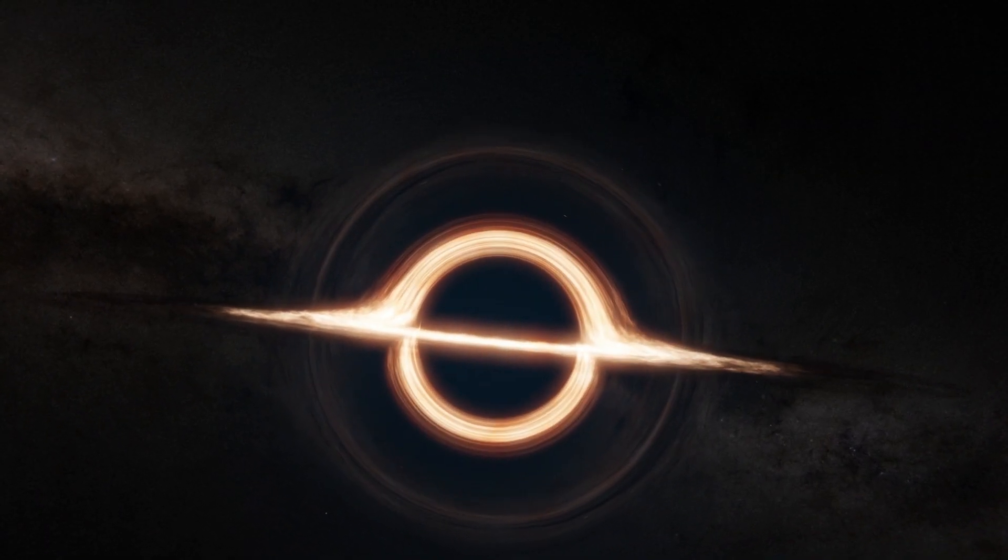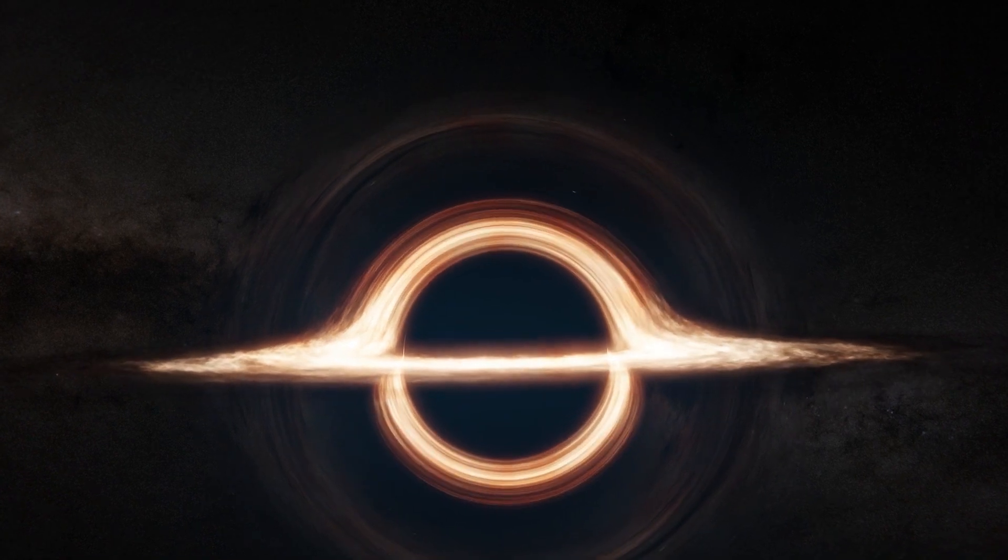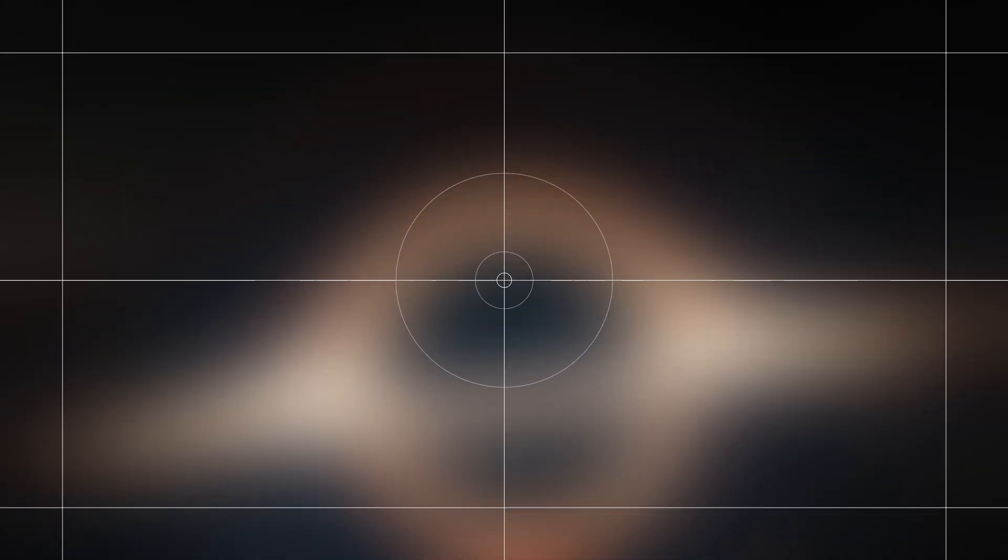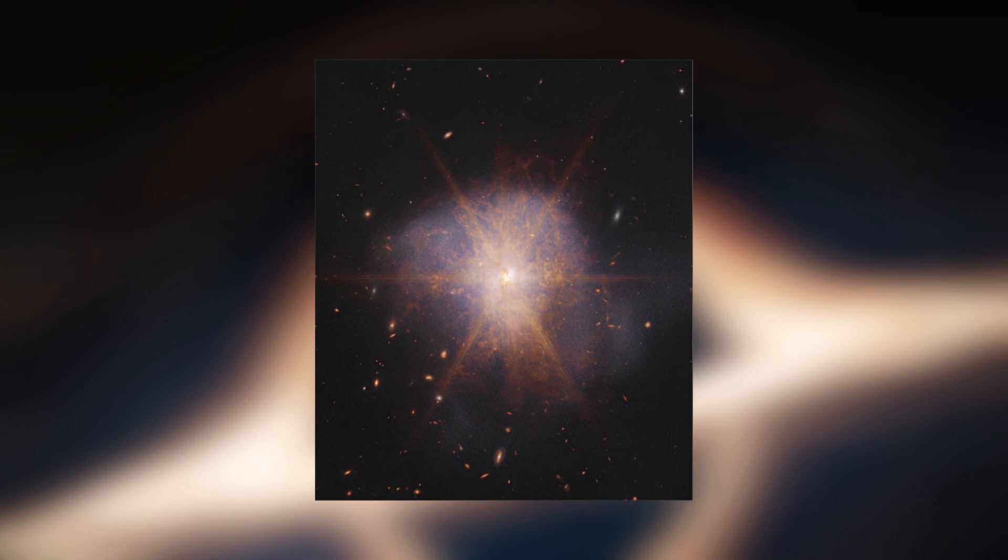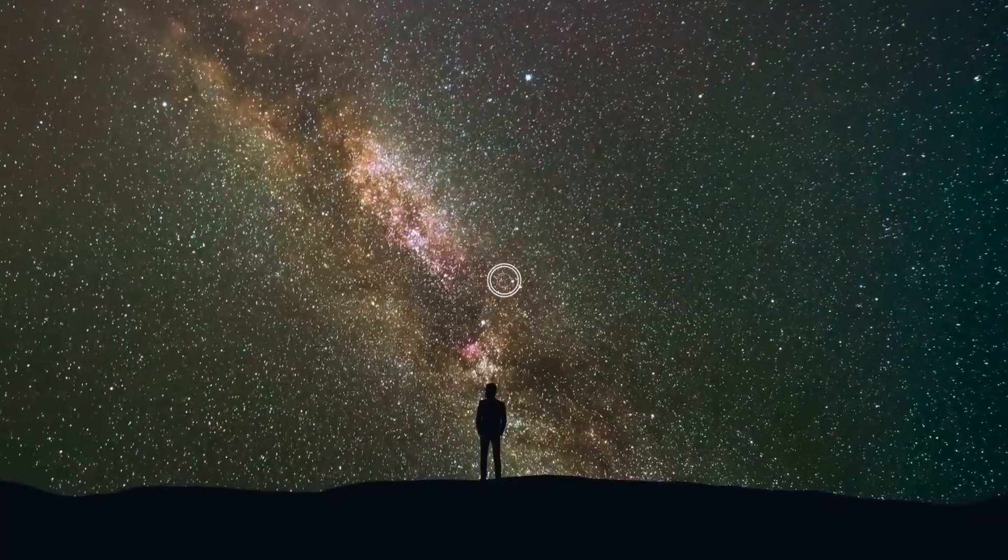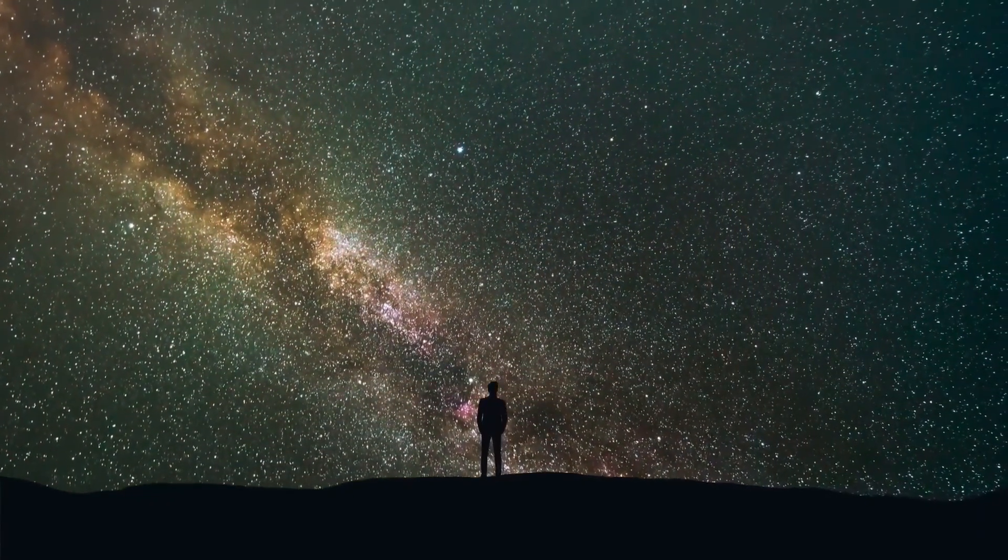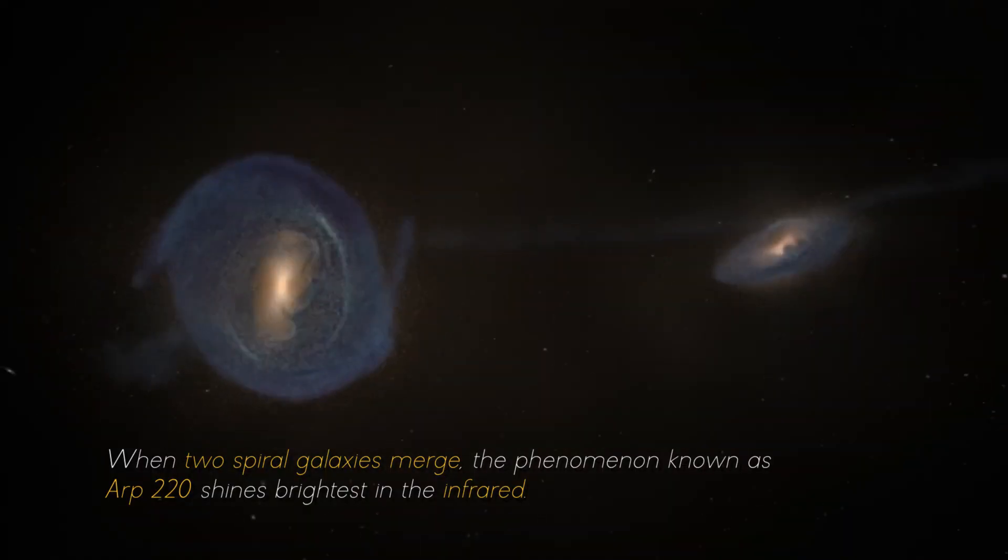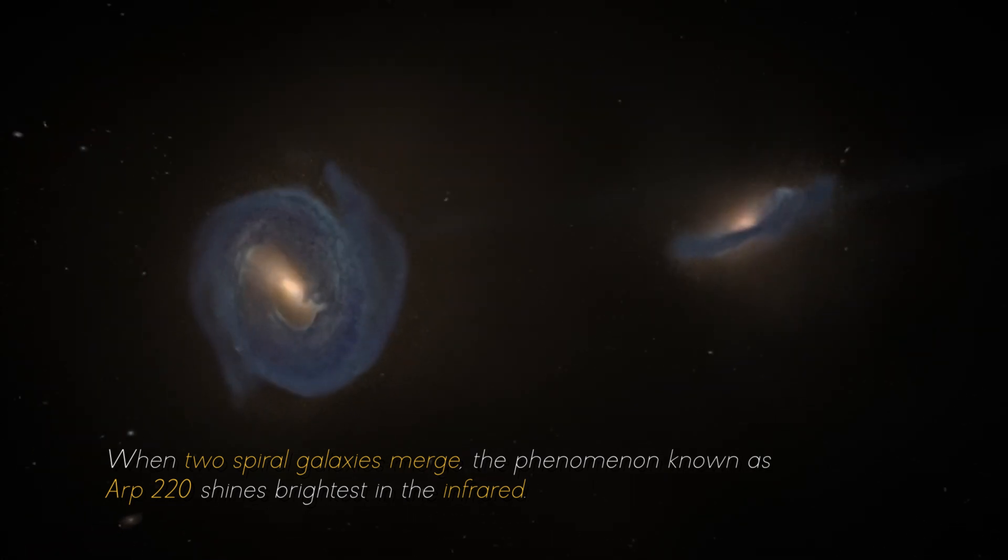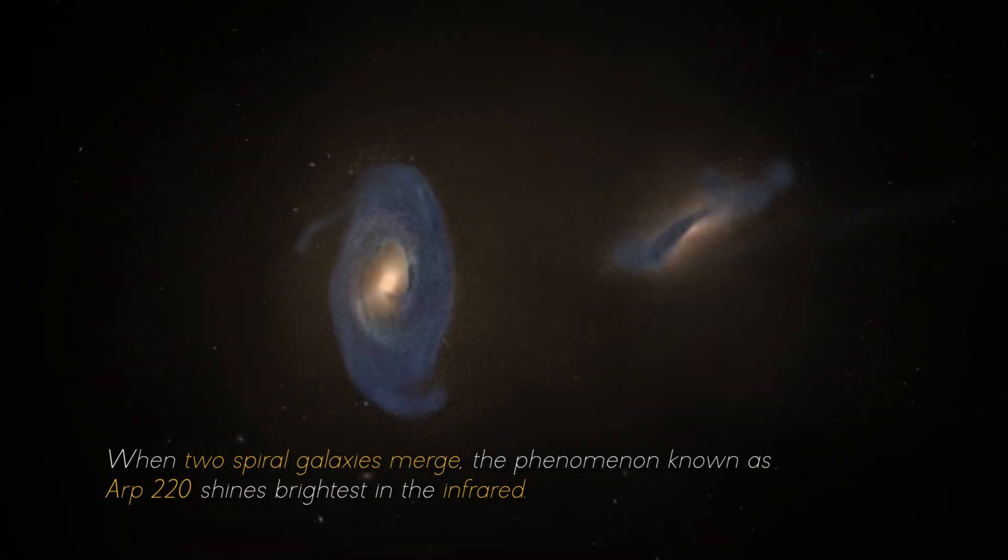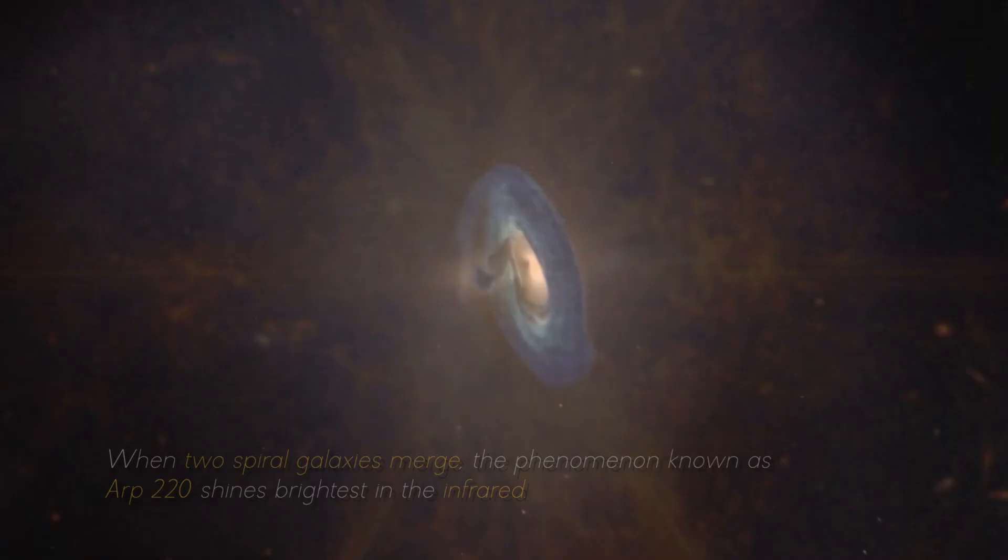But that's not all. NASA has made an exciting announcement about the galactic merger of 220, which was captured by the James Webb Space Telescope. This impressive galactic merger can be seen shining among other galaxies in the night sky. When two spiral galaxies emerge, the phenomenon known as ARP 220 shines the brightest in the infrared.